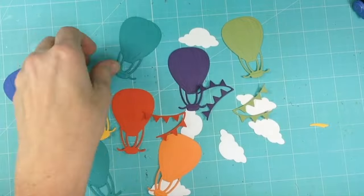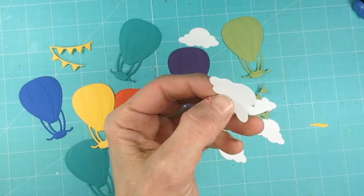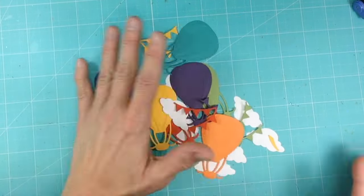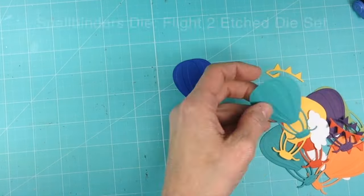My first project is a 5x7 canvas. Using the card stock that came in the kit, I cut a variety of shapes: balloons, banners, and clouds.